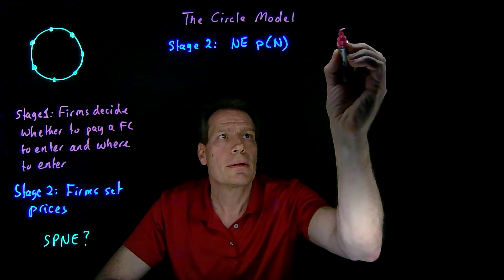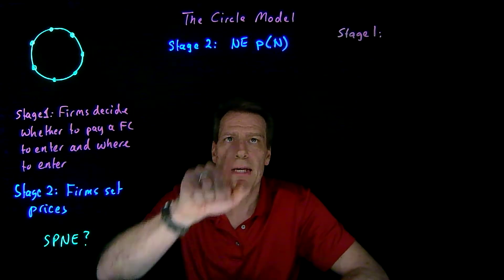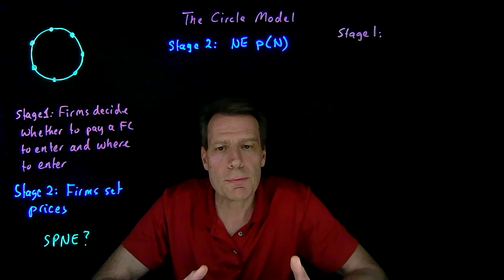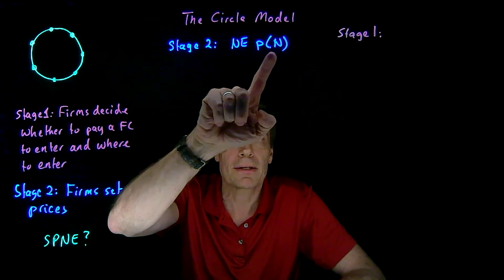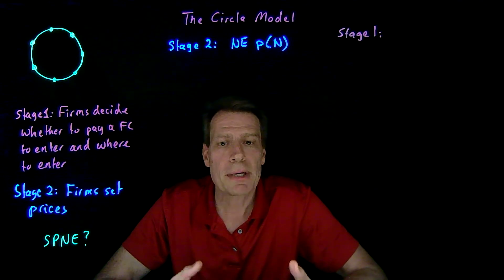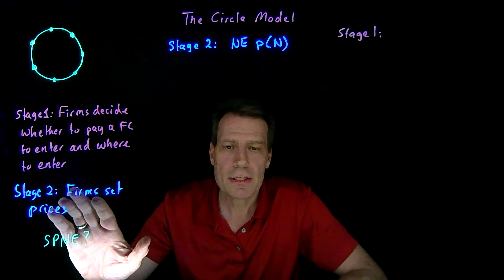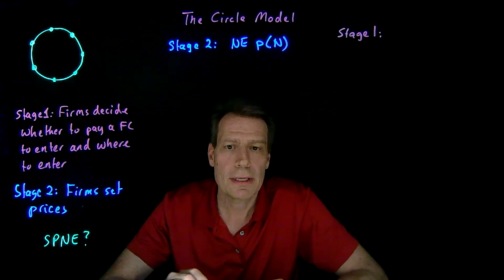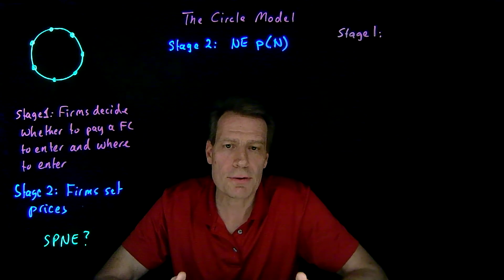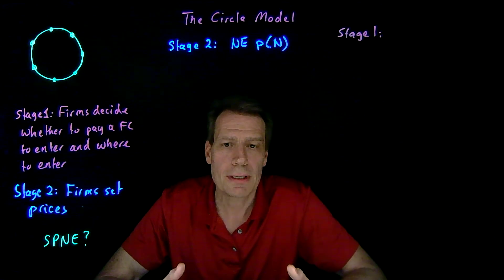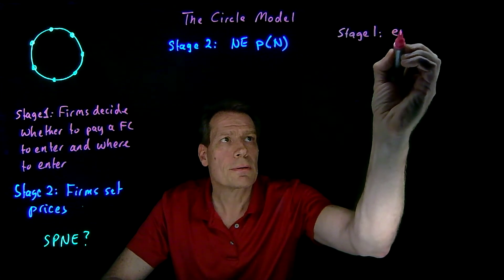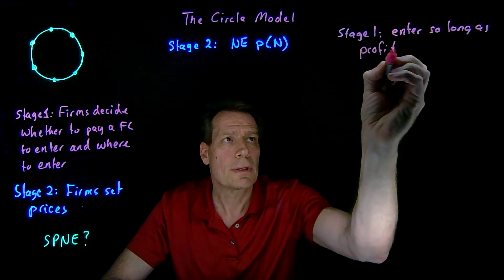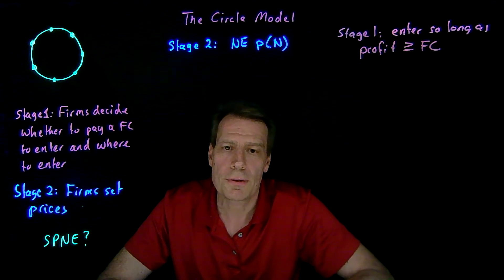In stage one, firms can anticipate what that price function looks like — they know what prices they'll be able to charge depending on how many firms have entered. So the only way firms will enter is if, given the prices that are going to occur, they can make a profit larger than the fixed entry cost. The profit in stage two doesn't include the fixed entry cost since by that point it's a sunk cost, but the profit made in stage two must be at least as large as the fixed entry cost.